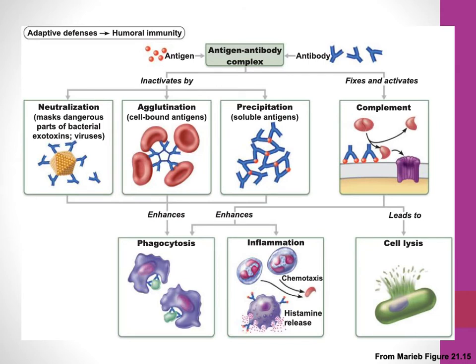Looking at the antibodies that B cells produce, they can have several different functions. When antibodies bind antigen, they form an antigen-antibody complex. One function, looking at the far right of the figure, is that it can play a role in complement activation — we already talked about the classical pathway where antibodies lead to C1 complex binding.